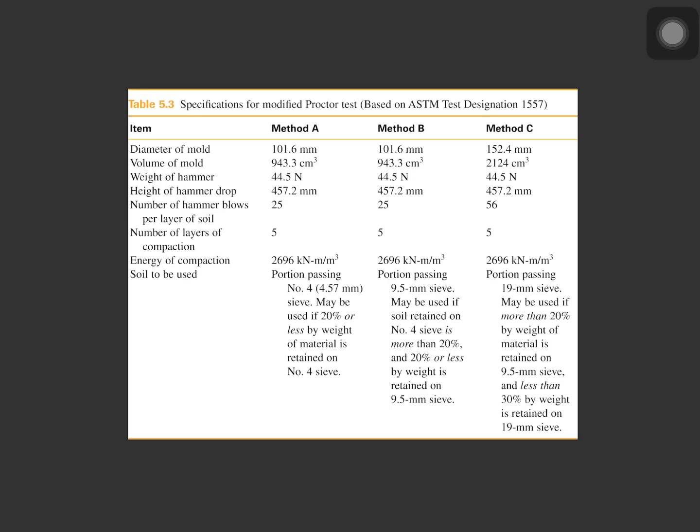On the next table is the specification for modified proctor test. You can see that the diameter of mold, volume of mold, remain unchanged, but the weight of hammer increases, and also the number of layers of compaction. And also correspondingly, the energy of compaction also increases. And the required soil to be used is also stated in the table.